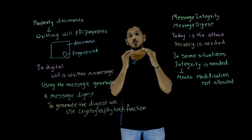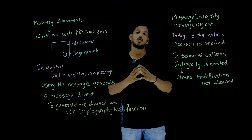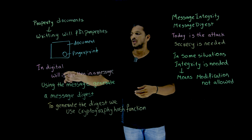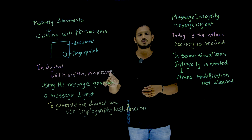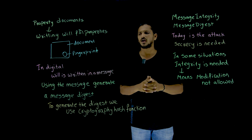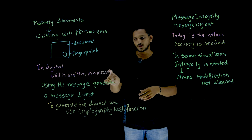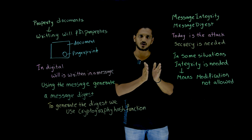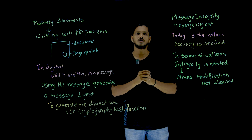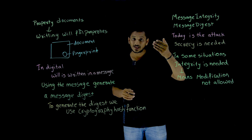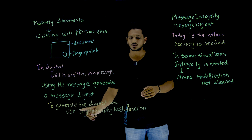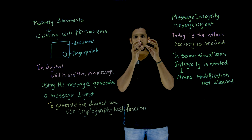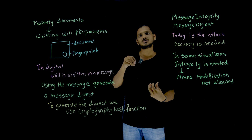But in the digital world, how are we going to prevent that modification? What we do is: the will is written in a document — we call it a message here. From this message, we generate a message digest. It is a code that is generated from the message. In order to generate that code — the message digest — we use cryptographic hash functions. This hash function takes the message as input and generates a message digest.